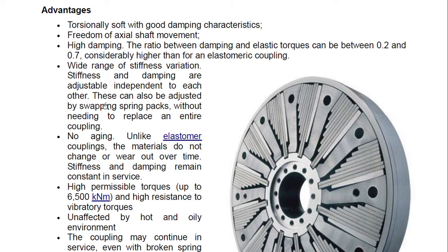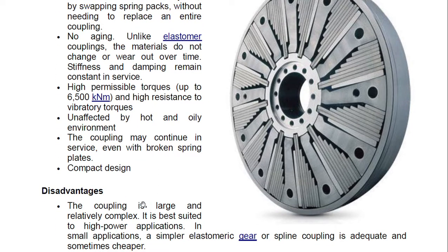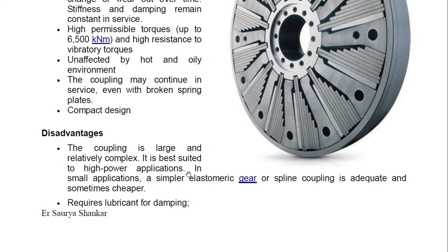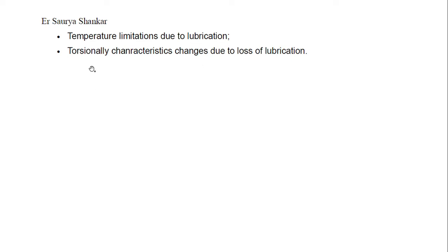Stiffness and damping are adjustable independently and can be adjusted by swapping spring packs without replacing the entire coupling. There is no aging unlike elastomer couplings — the material does not change or wear out over time; stiffness and damping remain constant in service. High permissible torque up to 6,500 kN·m and high resistance to vibratory torque. The coupling is unaffected by hot and oily environments and may continue in service even with a broken spring plate. Disadvantages: the coupling is large and relatively complex, best suited to higher power applications; it requires lubrication for damping and has temperature limitations due to lubrication.